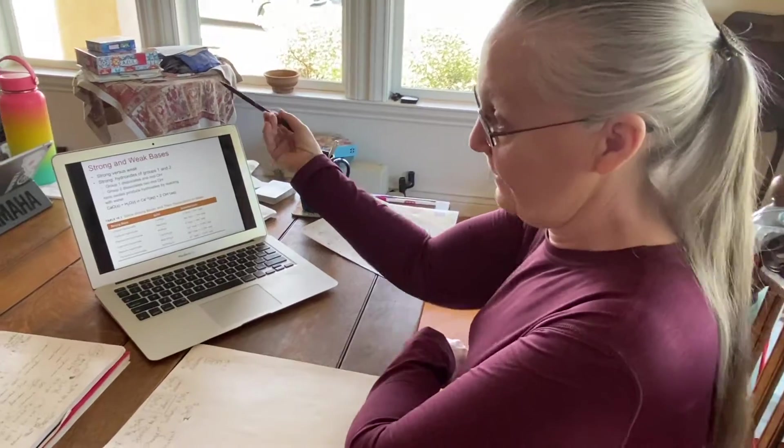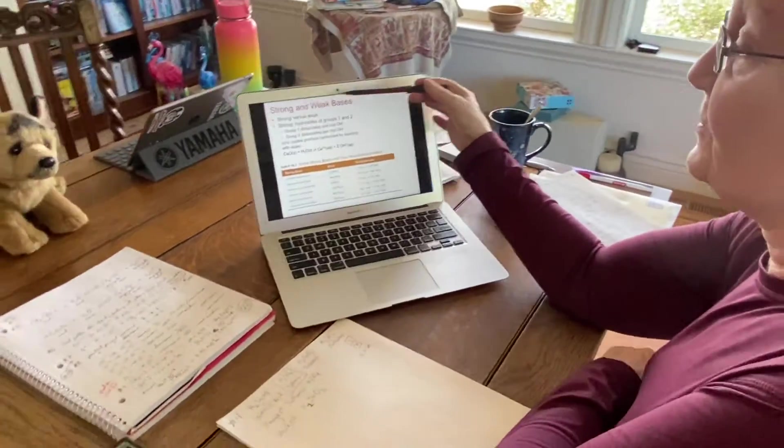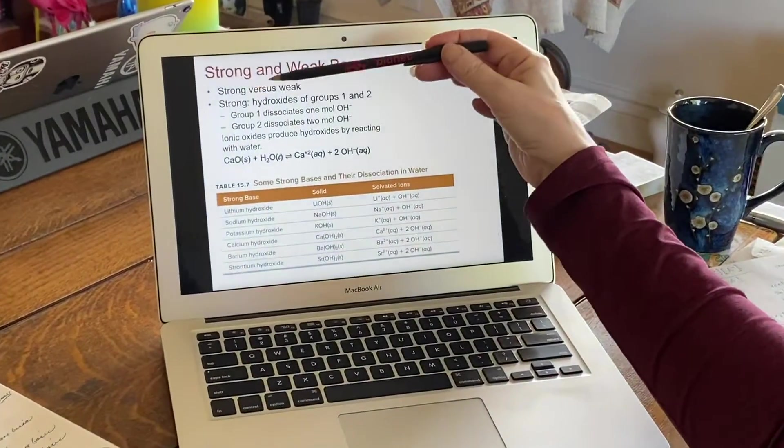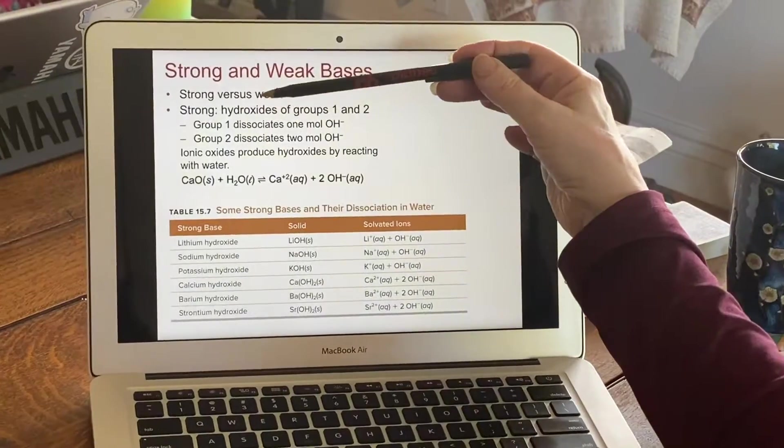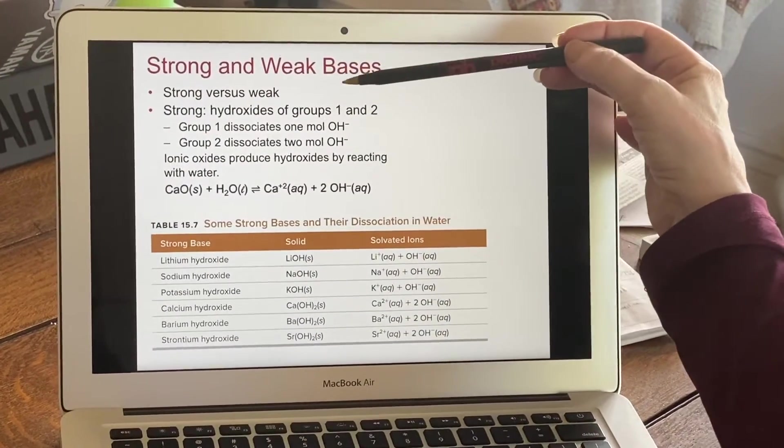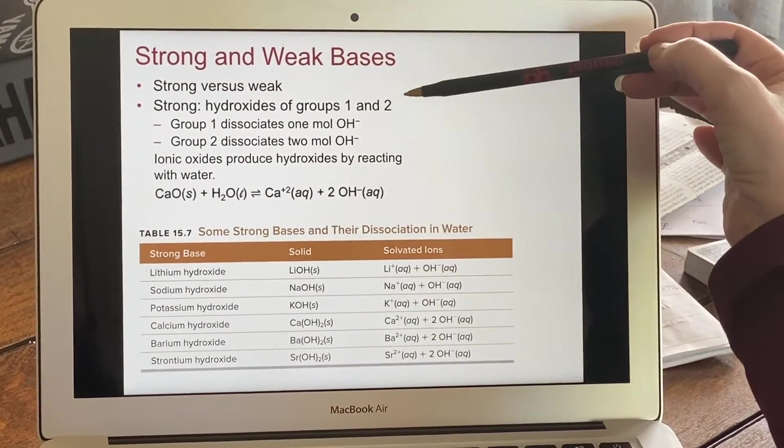Now we've talked about acids, it's time to talk about bases, strong versus weak. Where do we find our strong hydroxides? They are hydroxides of groups one and two.